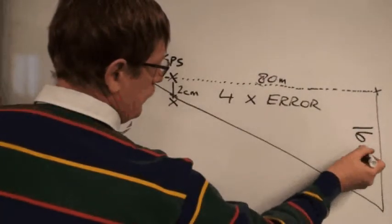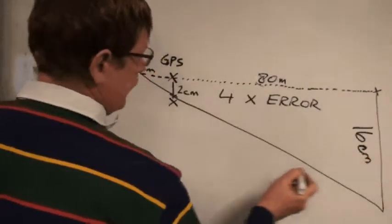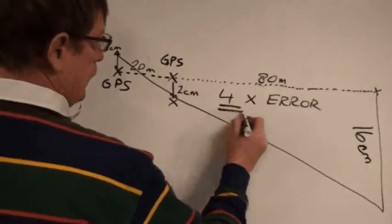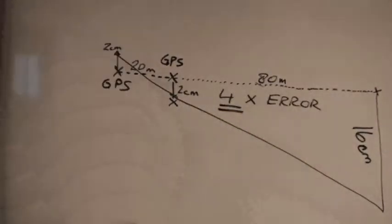Just the amount that it's off by each of the GPS points. So in this example, we're out a total of 16 centimeters by the time we get out to the 80-meter point.